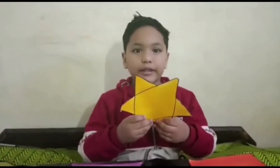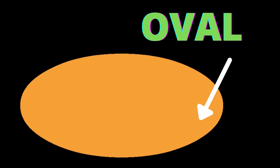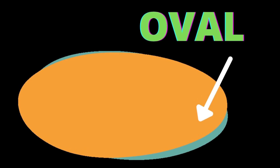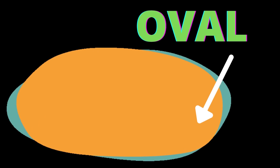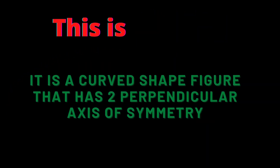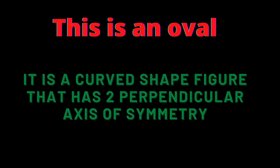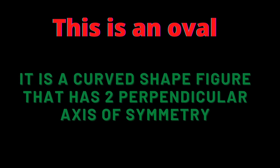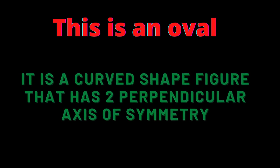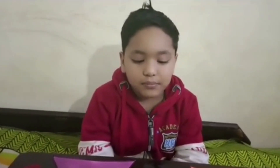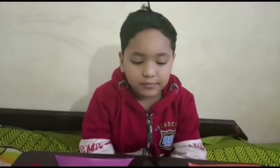It is a star. O-V-A-L, oval. This is an oval. It is a curved shape that has two perpendicular axes of symmetry. It is almost round and looks like an egg. What shape is that? It is an oval.